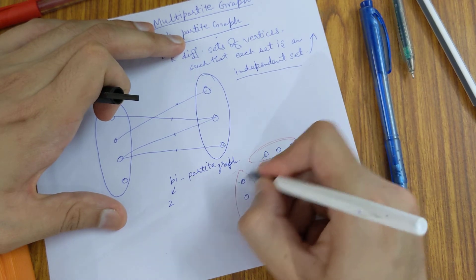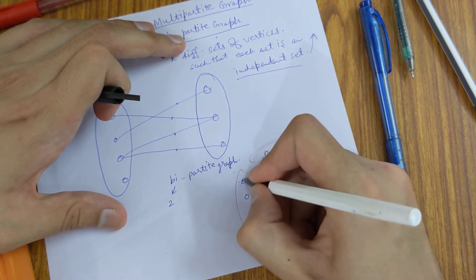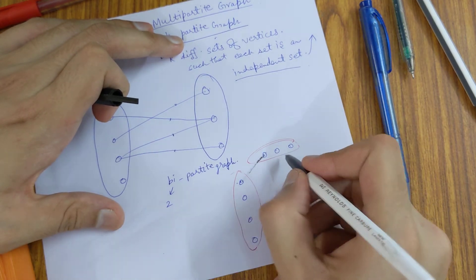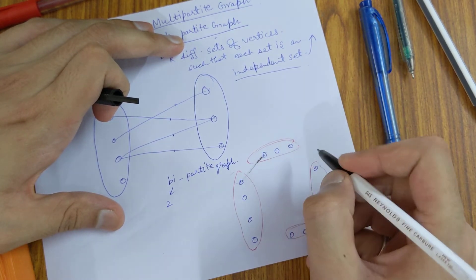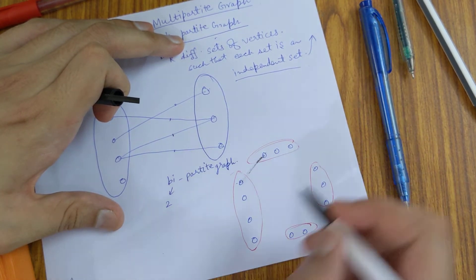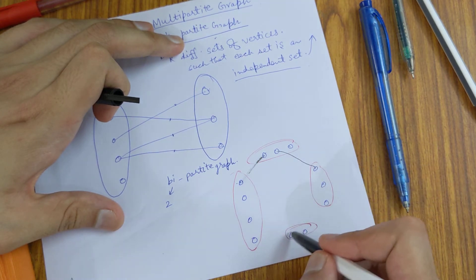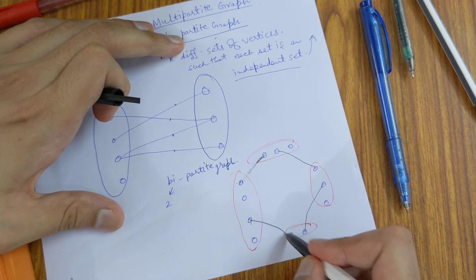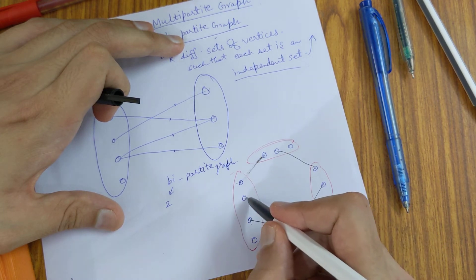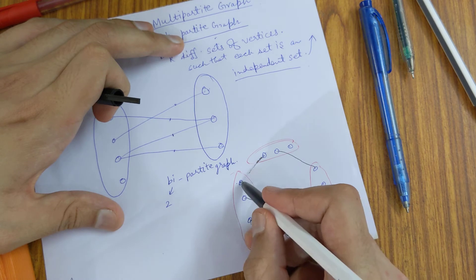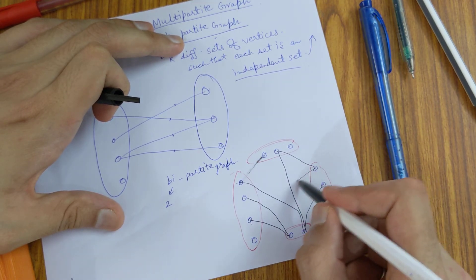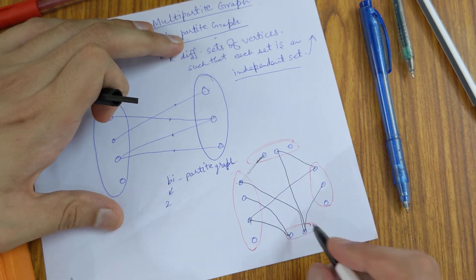connected to each other. Let's say this and this are connected to each other, and maybe this and this are connected to each other, this and this are connected to each other, and so on. But as you can see,